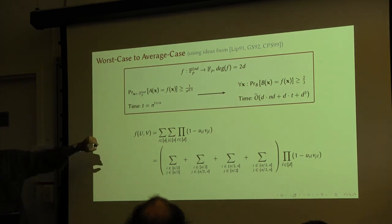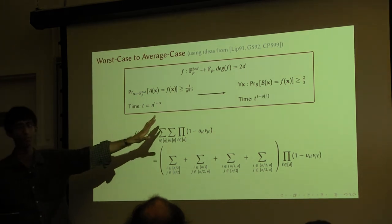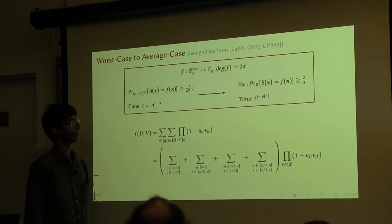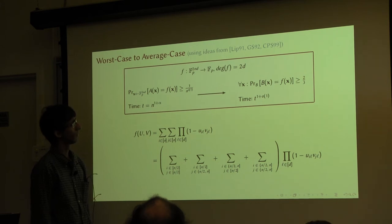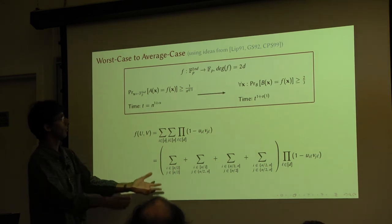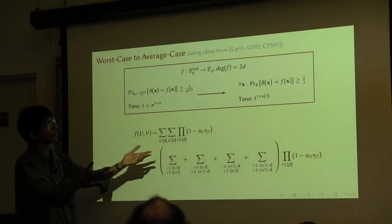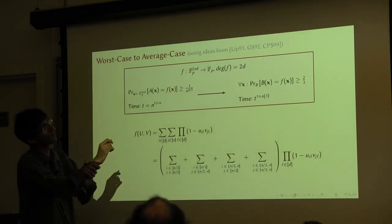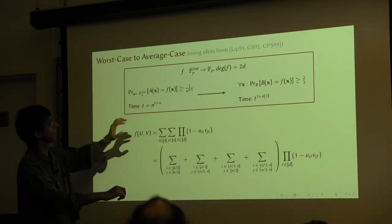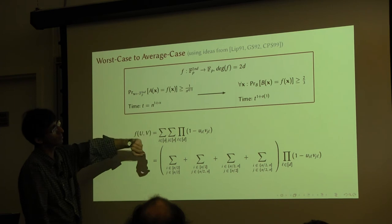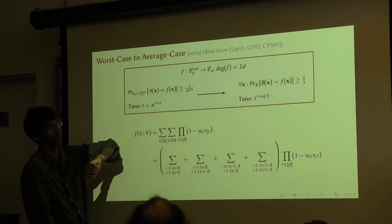Using list decoding along with this downward self-reducibility property lets you get what I promised earlier: if you have an algorithm A which does even slightly well — even slightly better than random — you can get a worst-case solution. You pay a little more in running time but not much more. This is the theorem: if you can solve this in the average, you can solve it in the worst case in almost the same time.